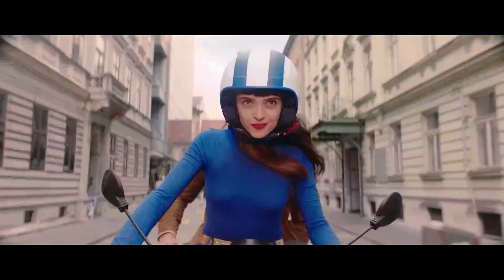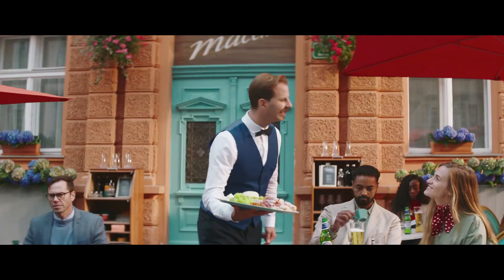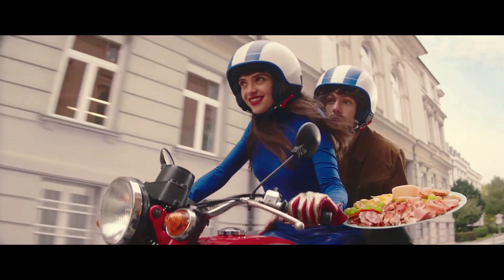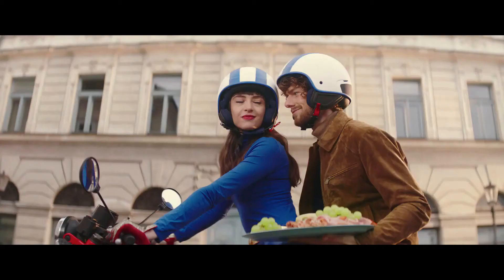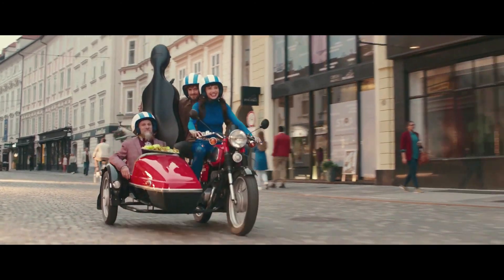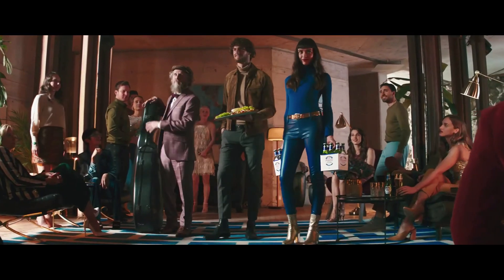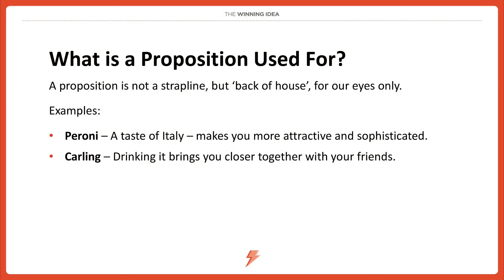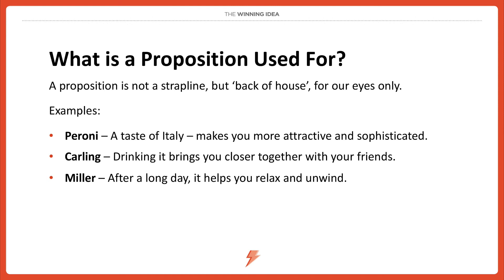When we talk about the best version of the truth, Peroni is a great example. The idea behind it is that drinking Peroni makes you more attractive and sophisticated. It gives us something to anchor around and a sense of direction, and we can use our creativity over the top of that. Carling's proposition is that it brings you closer together with your friends — they're really building brand value into their messaging. The strategy and emotional payoff have been identified and funneled into a proposition: drinking Carling brings you closer with your friends.